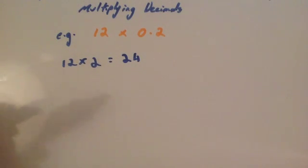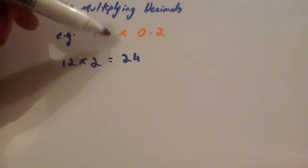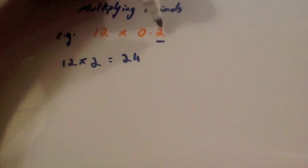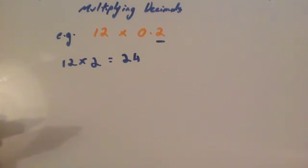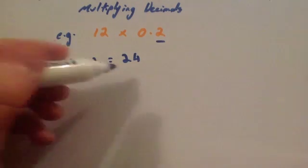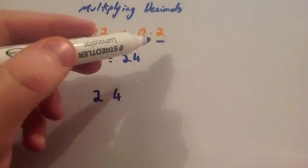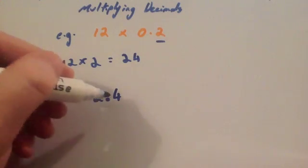Step two: count the number of digits after the decimal points in the question. This 12 doesn't have any digits after the decimal point, but 0.2 has one digit after the decimal point. So in the question there is one digit after the decimal point. Therefore in the answer there must be one digit after the decimal point. With our 24, we need to place the decimal point so that there is one digit after it, giving 2.4.